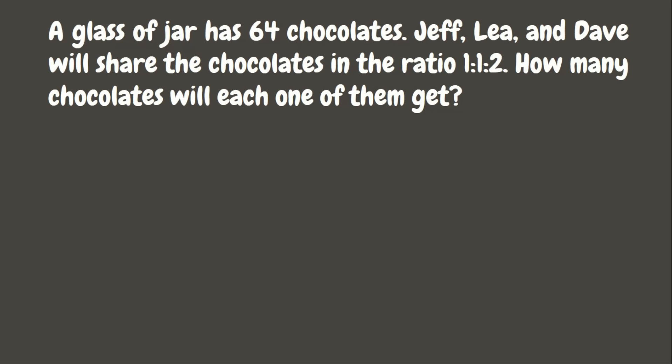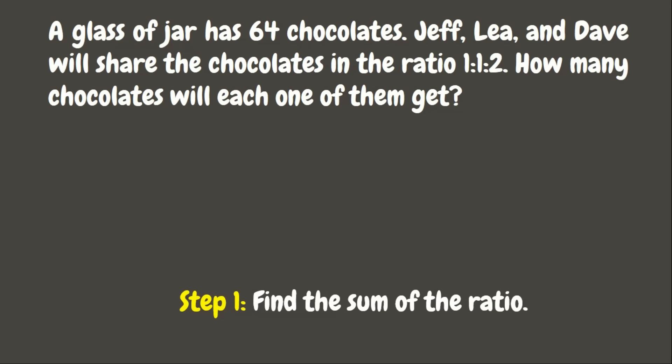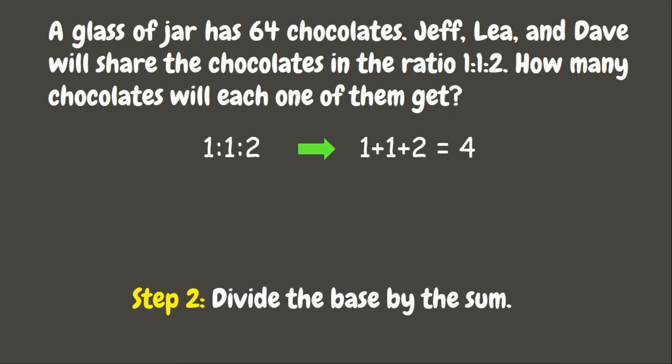In solving partitive proportion, the first step is to find the sum of the ratio. Since the ratio is 1 is to 1 is to 2, let's add the numbers: 1 plus 1 plus 2 equals 4. Now the next step is to divide the base by the sum. The base is the total number of chocolates, which is 64. Let's divide 64 by the sum, 4.